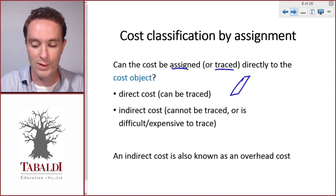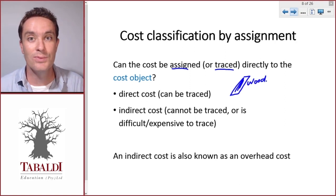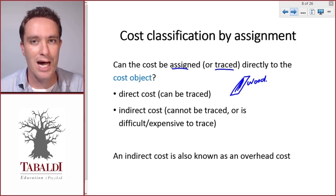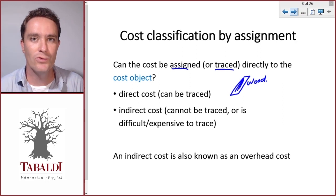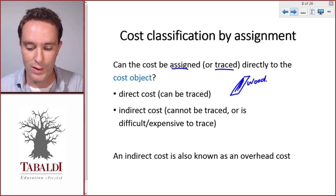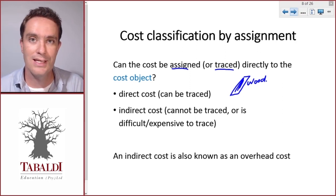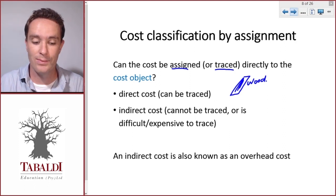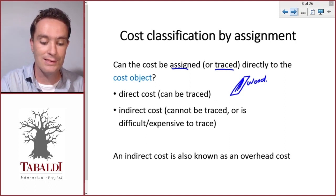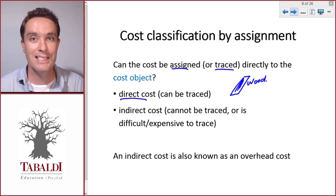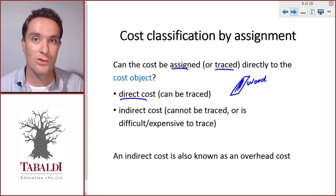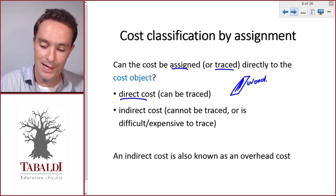Let's see which costs we can trace directly to the table. The first example is the wood — we can actually observe or see how much wood we use for each table, and if we know what the wood cost us, it's easy to trace that cost to the table. So that's a direct cost — it can easily be traced to the cost object.